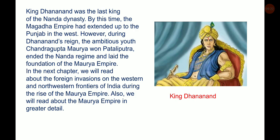However, during Dhanananda's reign, the ambitious youth Chandragupta Maurya won Pataliputra, ended the Nanda rule and laid the foundation of the Maurya empire. In the next chapter, we shall read about the foreign invasions on the western and north-western frontiers of India during the rise of the Maurya empire.